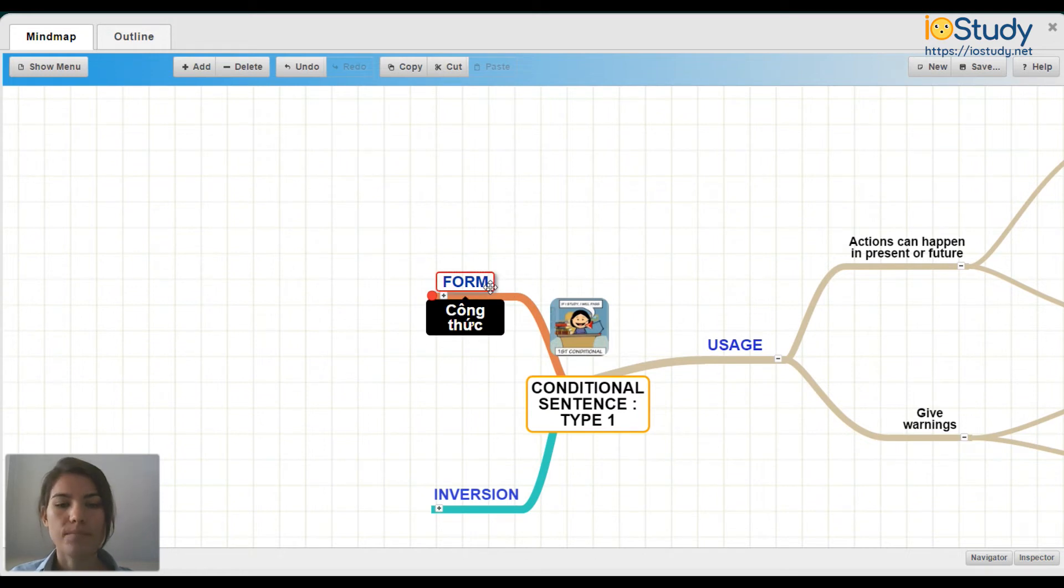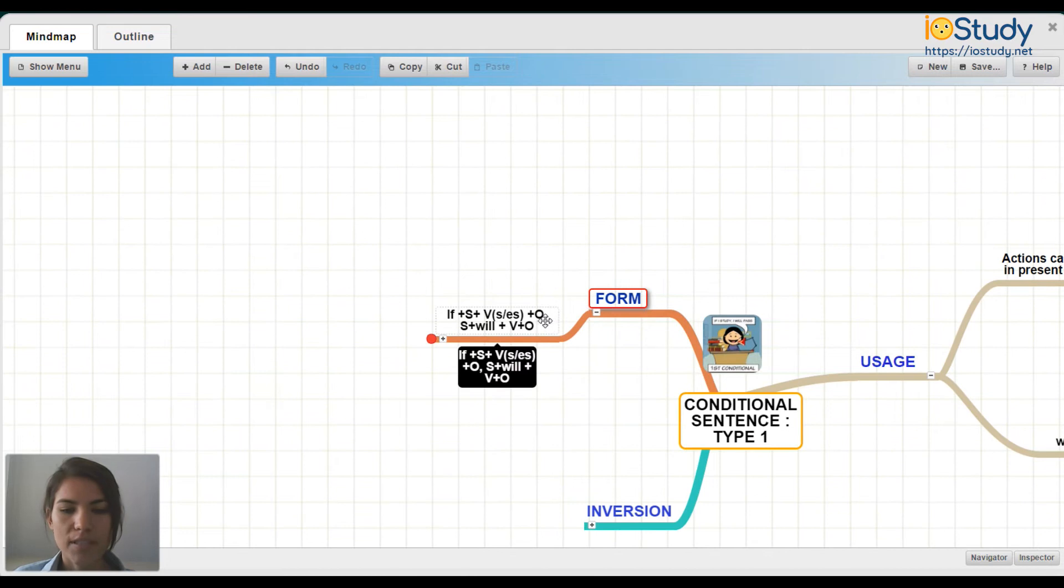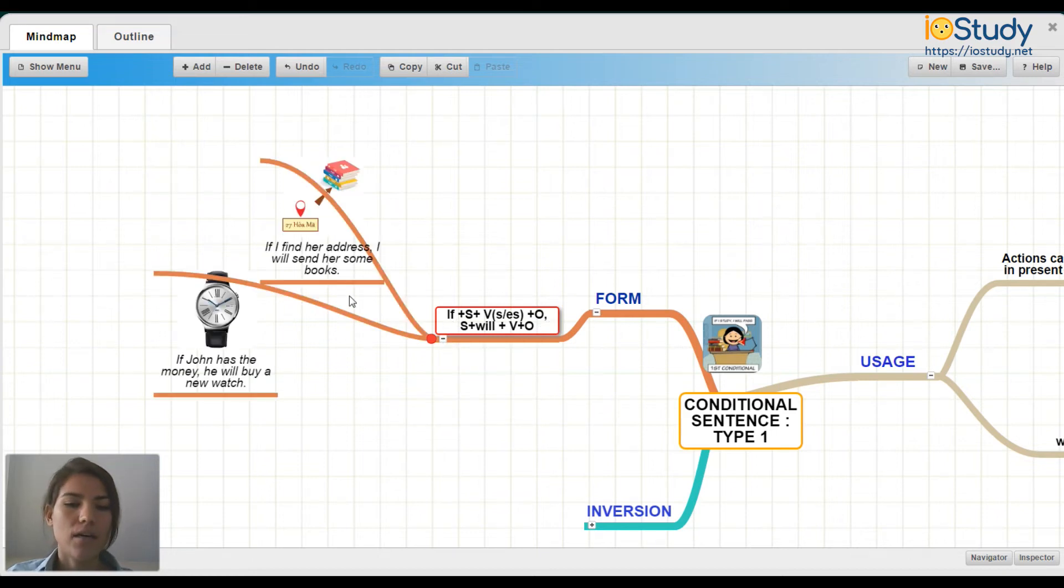Now let's talk about the form. So the form is here. Here we say if plus subject plus verb s or es plus object comma subject will verb object.